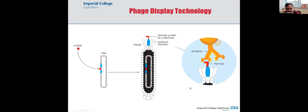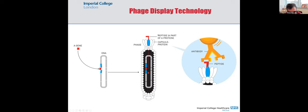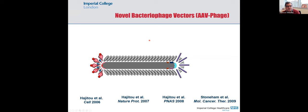The phage display technology modifies coat proteins — like the P3 minor coat protein of M13, a filamentous phage — to display a ligand that allows the phage to bind to antibodies or other receptors. If that receptor is selectively expressed in a tissue or in cancer, the bacteriophage becomes targeted and selective. You extract the genome, cut the gene for the coat protein, insert the DNA sequence coding for the ligand, and generate a fusion gene producing a recombinant protein that allows the phage to bind a specific receptor.